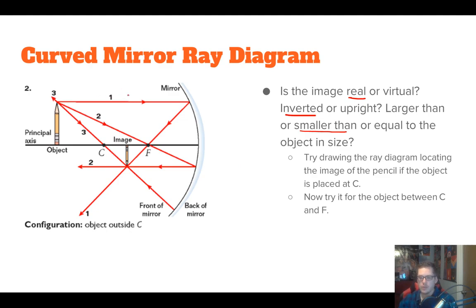We can start to predict what kind of image we'll get based on where the object is relative to C and F. If your object is past C farther out, the image will always be inverted and smaller than the original object, and the farther you go, the smaller that image will be.